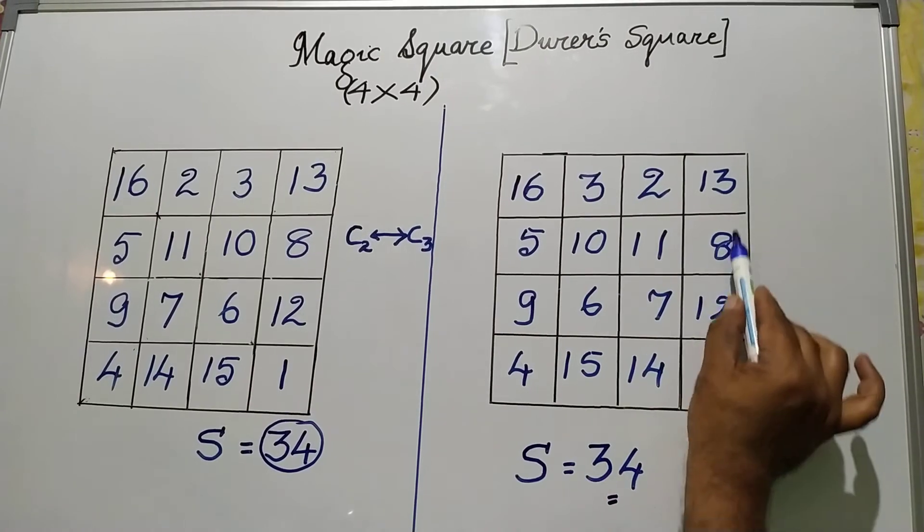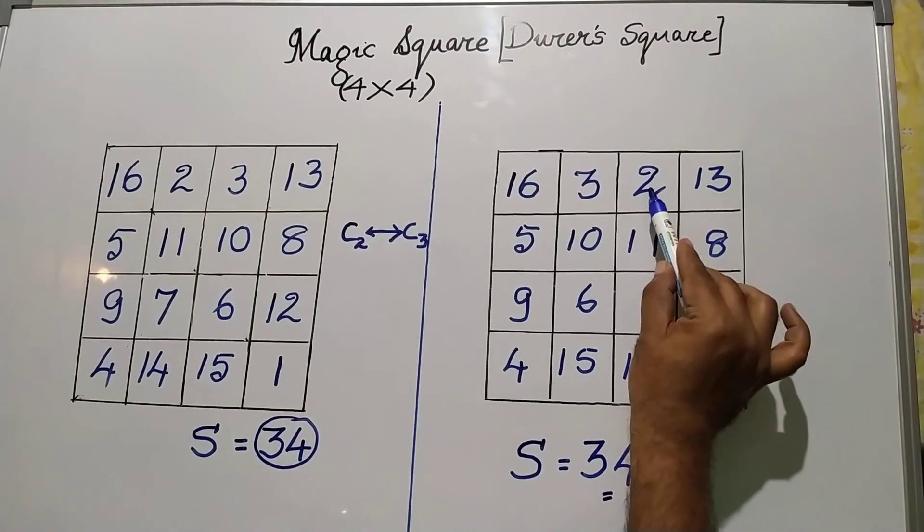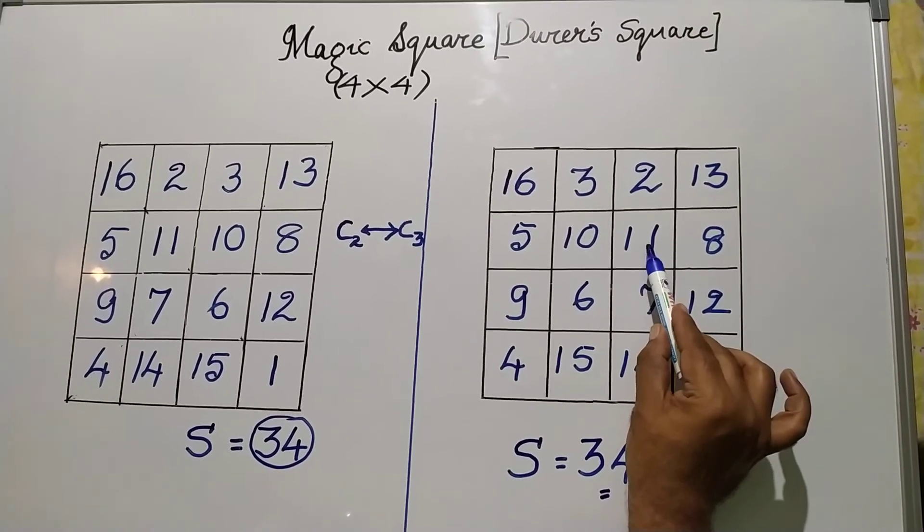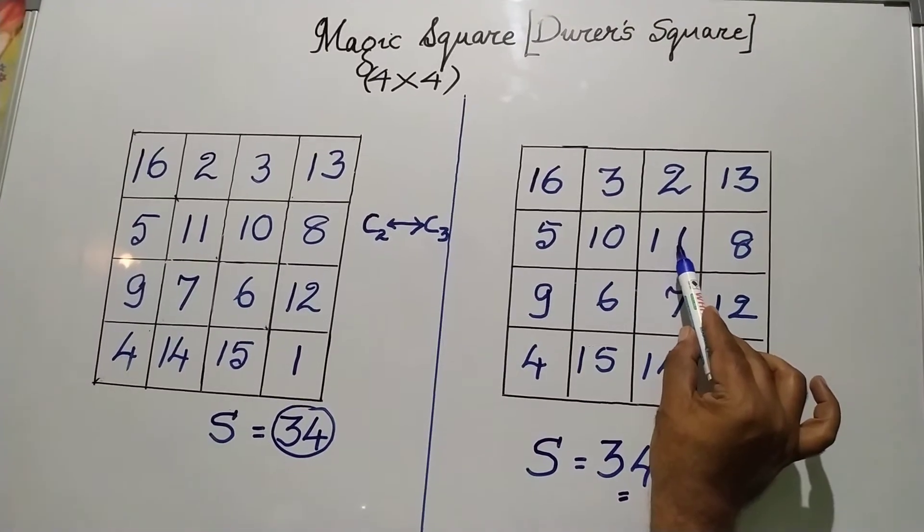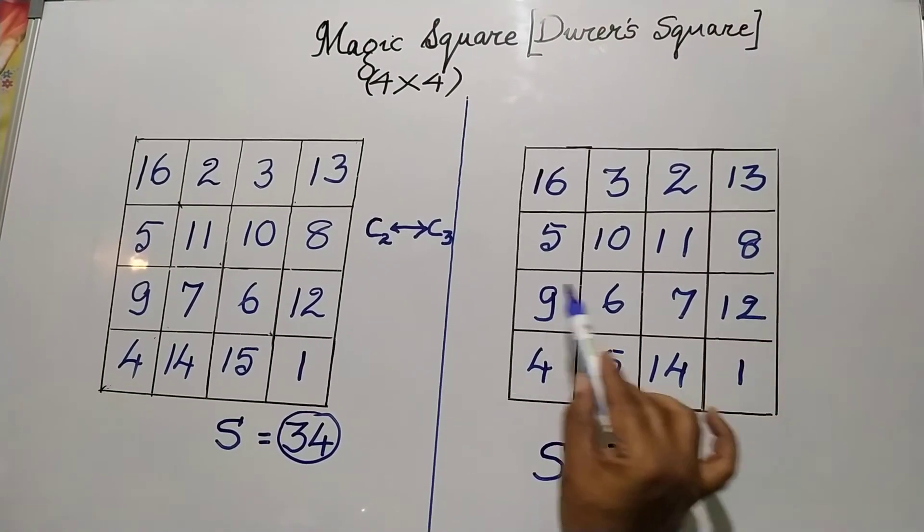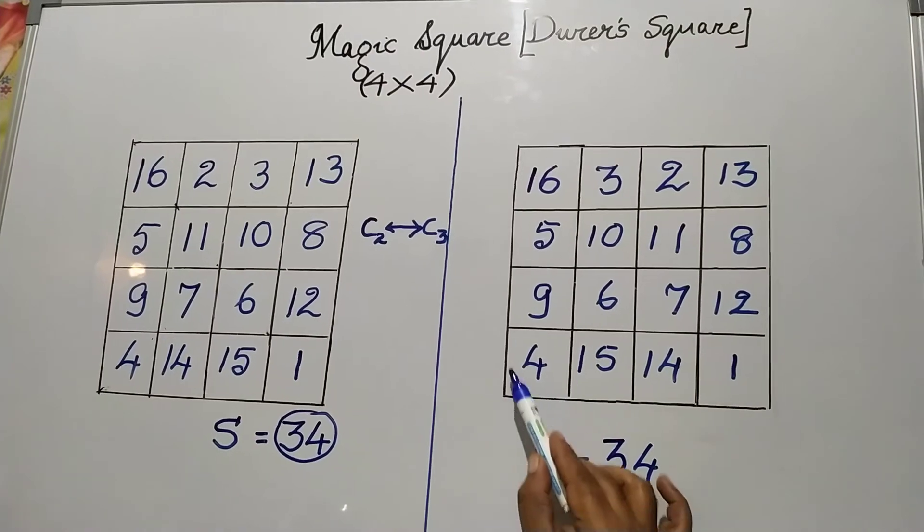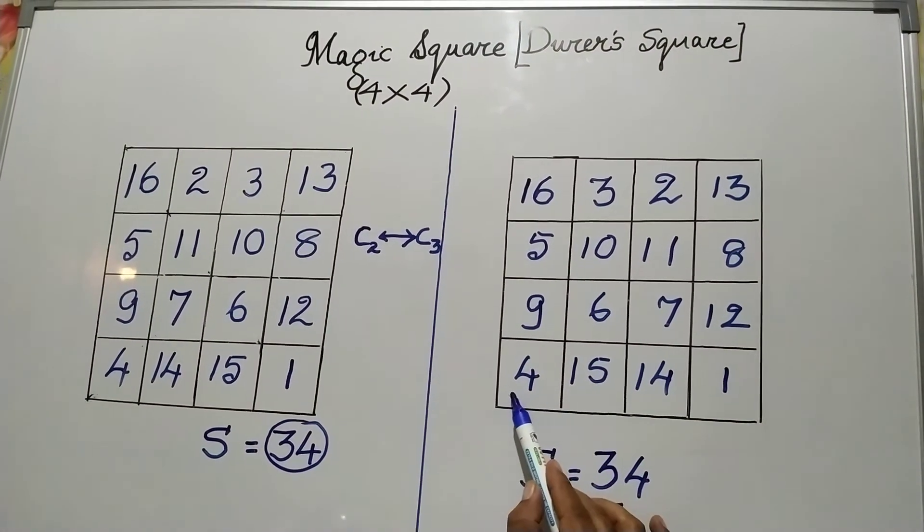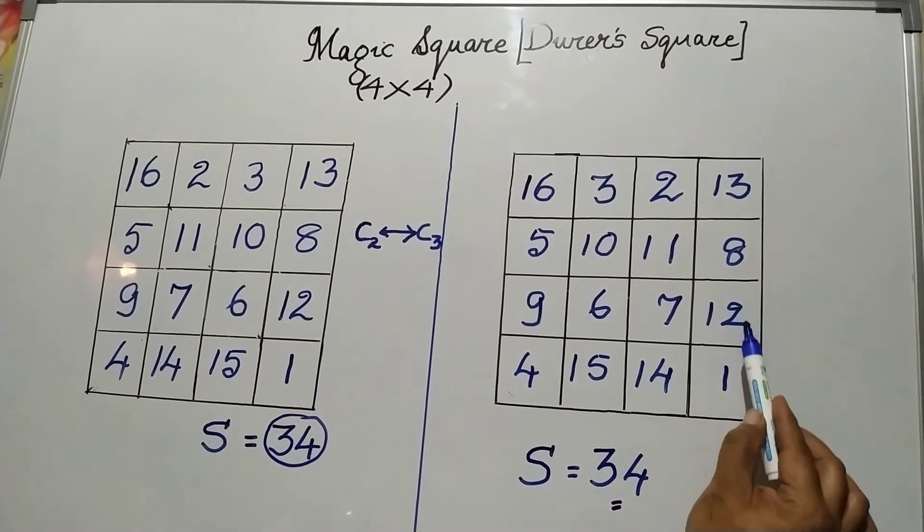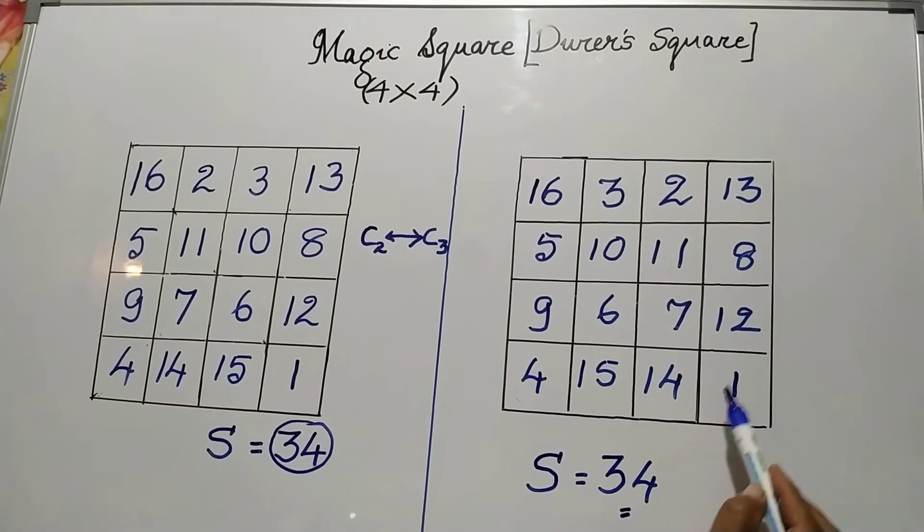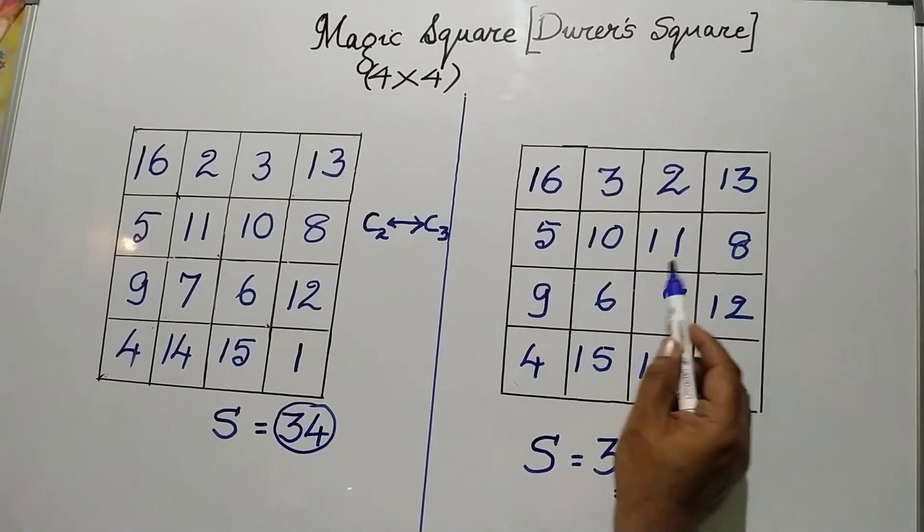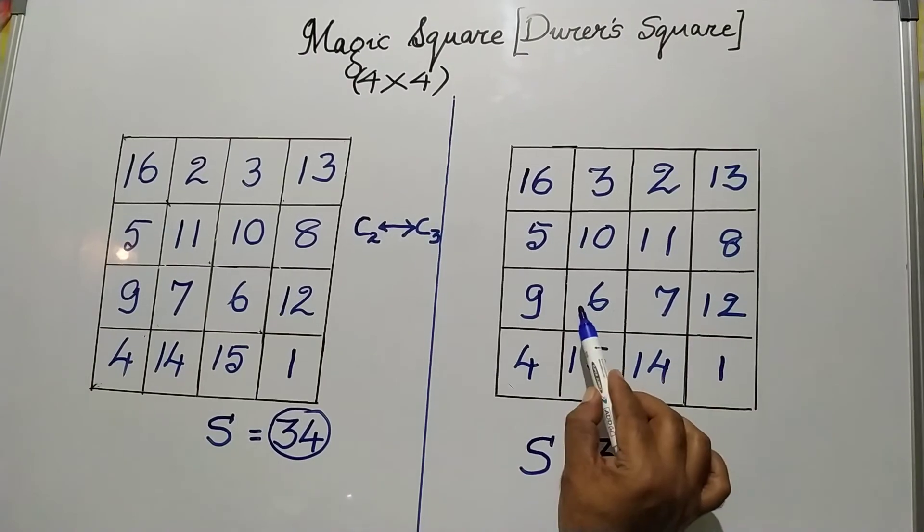Take the 4 squares on the right hand side top. 13 plus 2, 15. 15 plus 11 will be 26. 26 plus 8 will be 34. The left hand side bottom 4 squares, if you add you will get 34. Right hand side bottom 4 squares or grids, if you add you will get 34. The central 4 squares, if you add you will get 34.